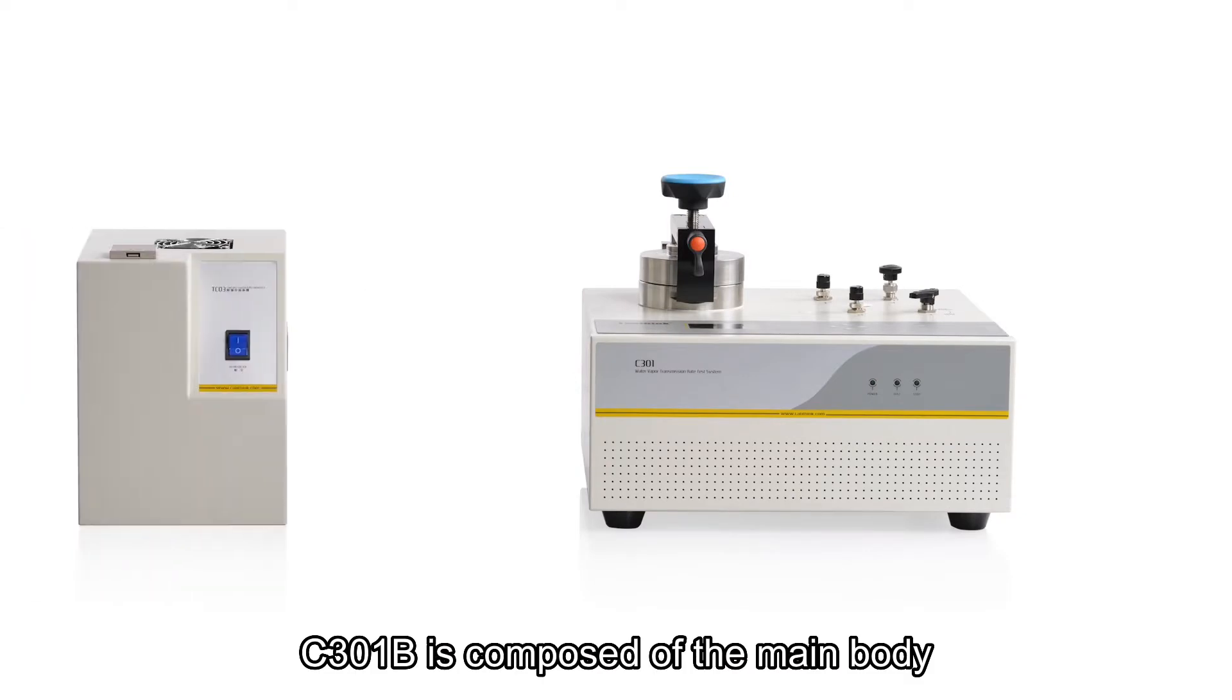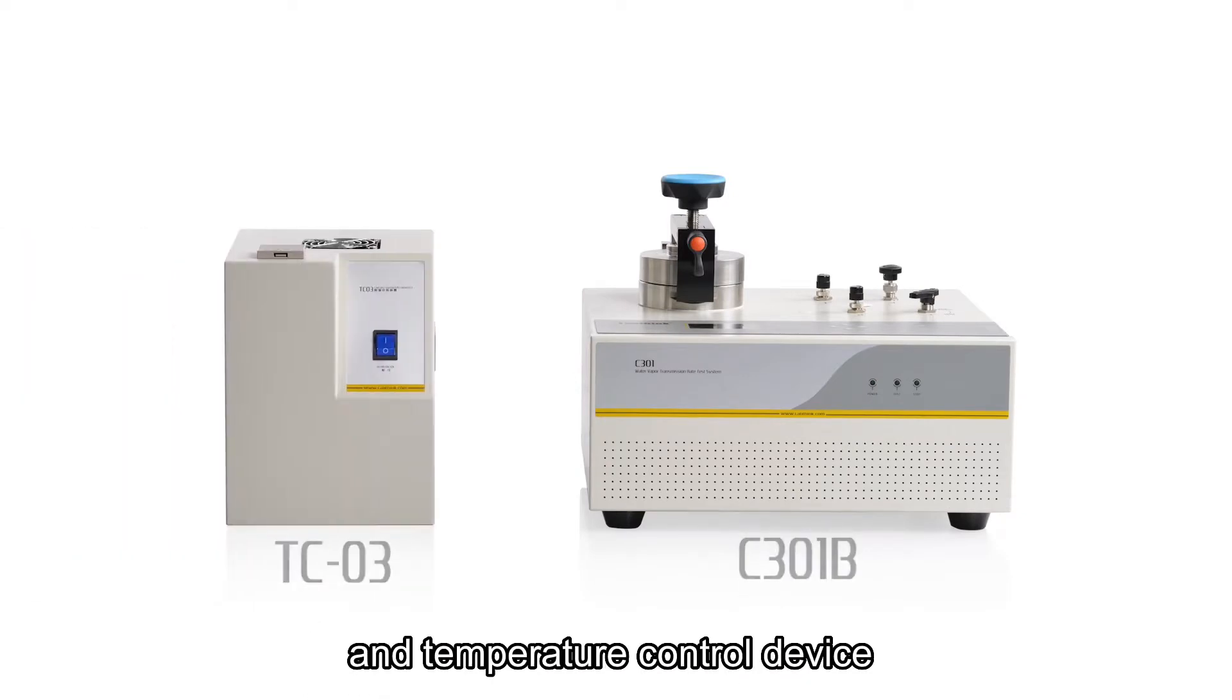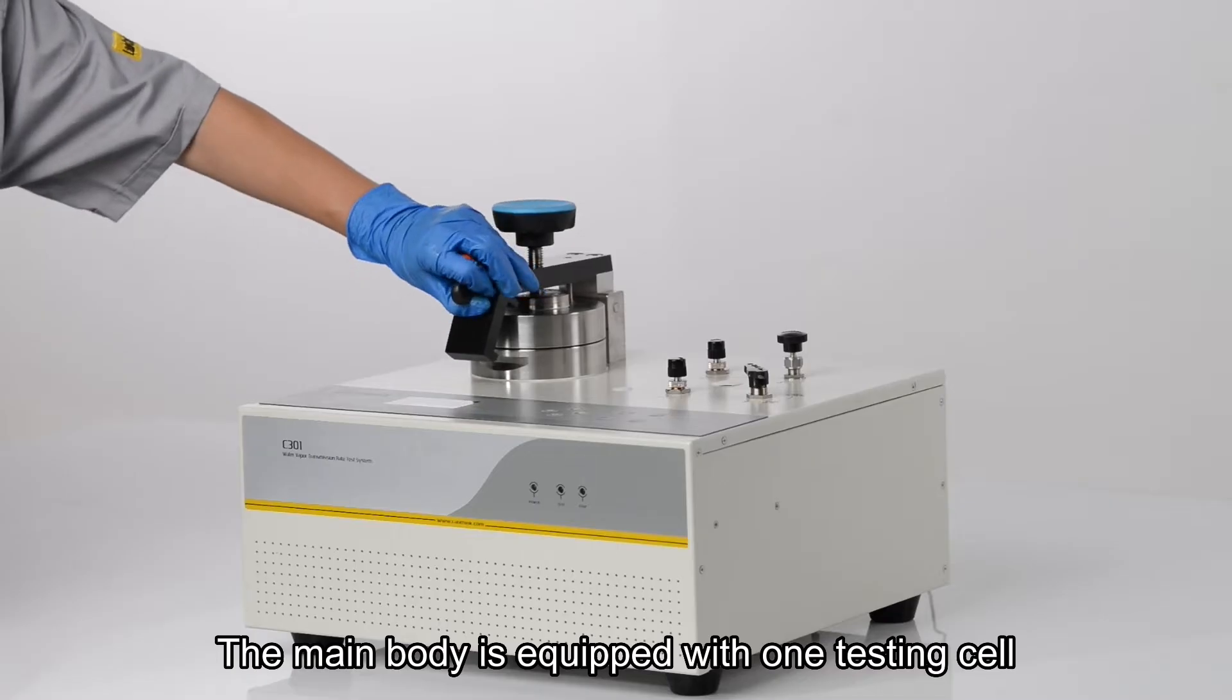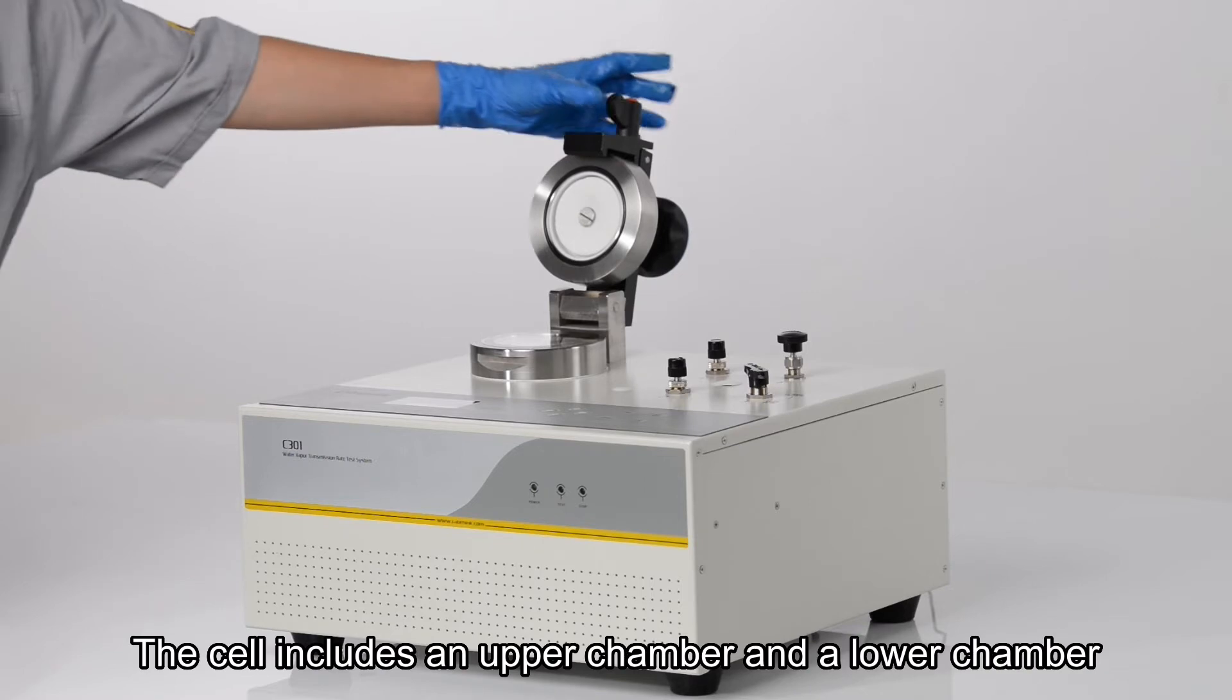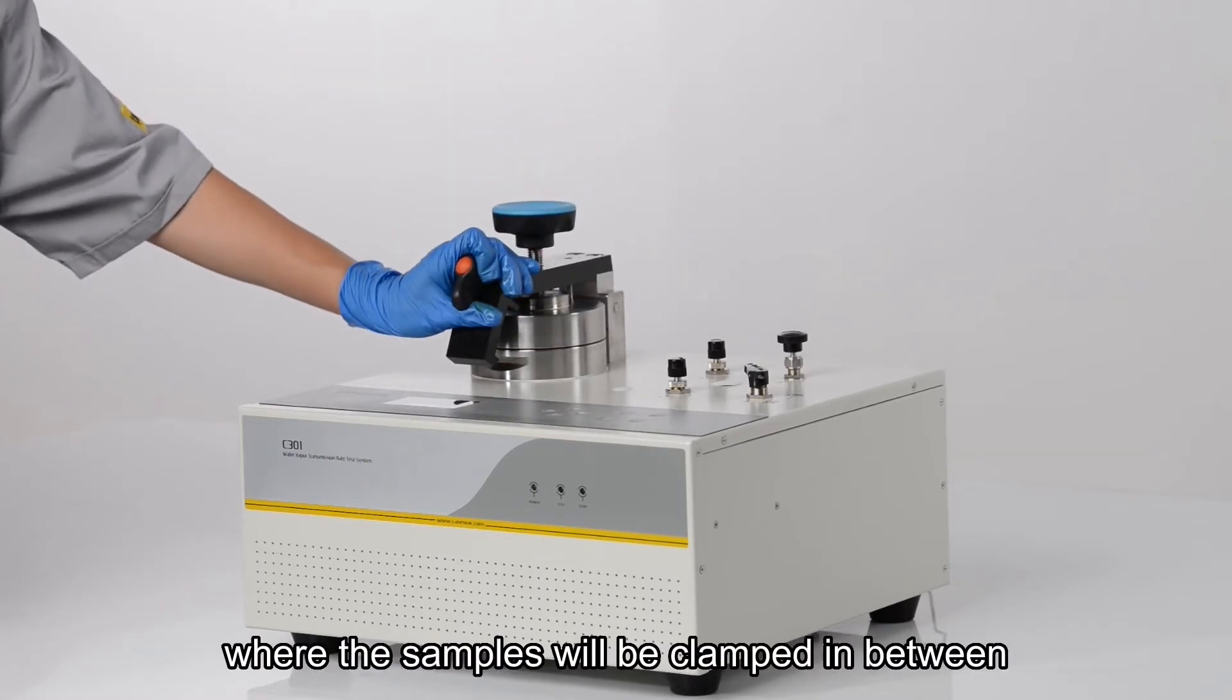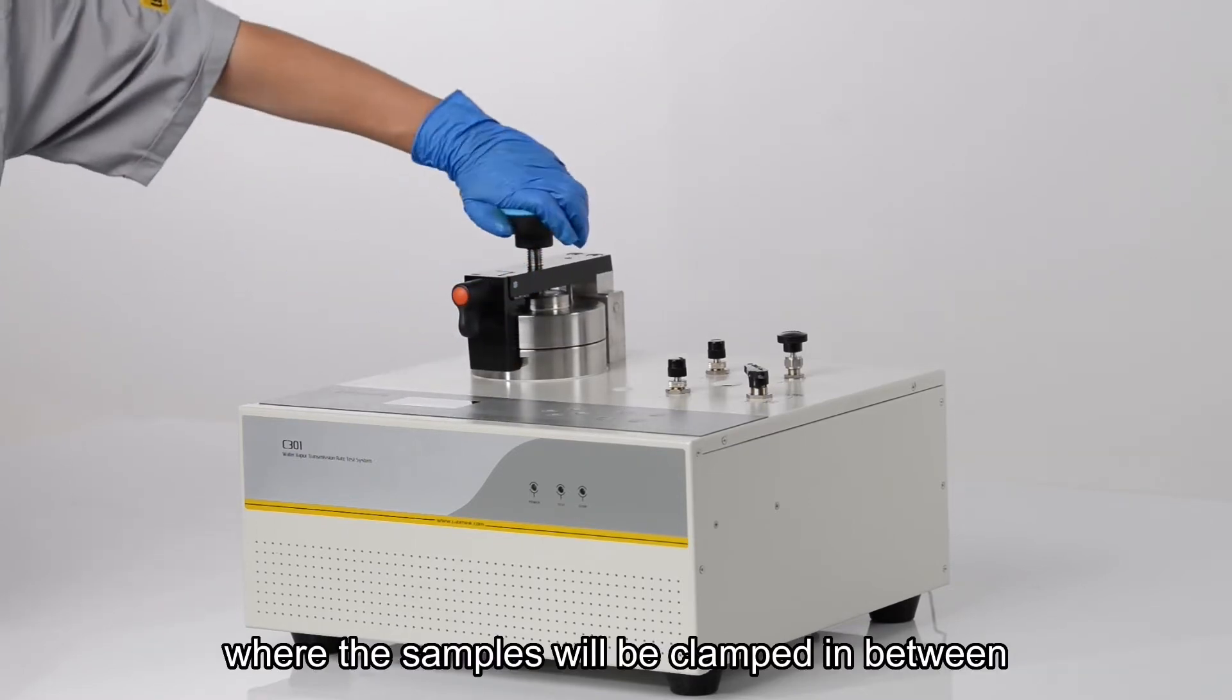C301B is composed of the main body and temperature control device. The main body is equipped with one testing cell. The cell includes an upper chamber and a lower chamber, where the samples will be clamped in between during testing.